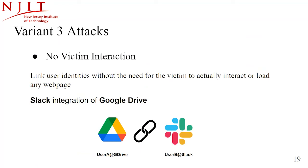In the third variant, we show how it's possible to perform the attack without the victim even interacting with the attack page. The attacker's goal is to link two account IDs — in this example, one for Google Drive and one for Slack. The attacker shares a resource privately with the victim in Google Drive, then uses the Google Drive integration in Slack to send these shared resources to a set of targeted Slack users. The Google Drive bot will prompt all targeted Slack users for permission except for the one who already has access — that one user is the victim — allowing the attacker to link the victim's Google Drive and Slack account IDs without any direct victim interaction.